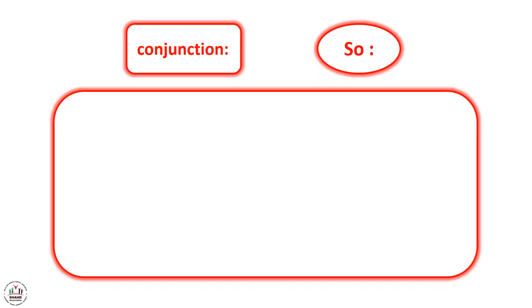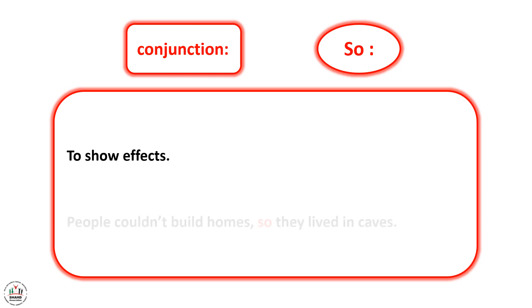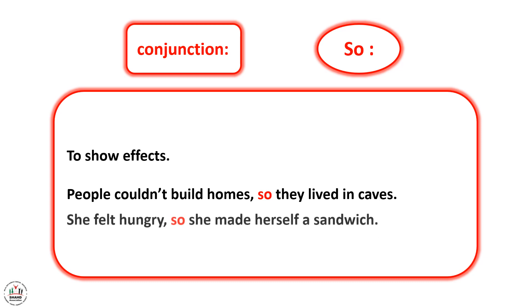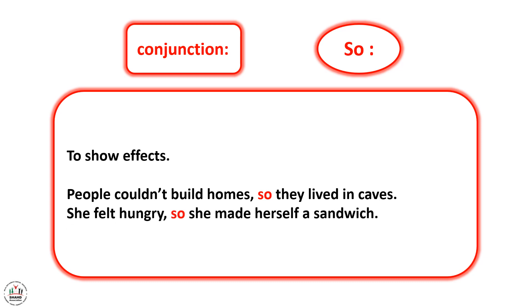We use 'so' to show effects. For example: People couldn't build homes, so they lived in caves. She felt hungry, so she made herself a sandwich.